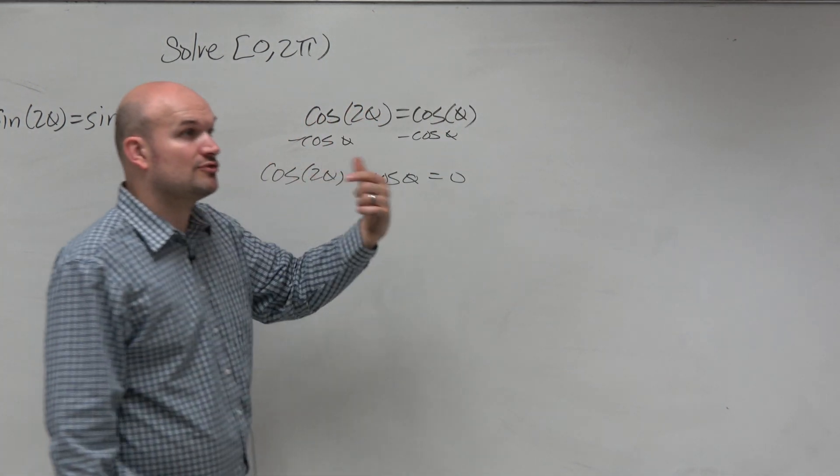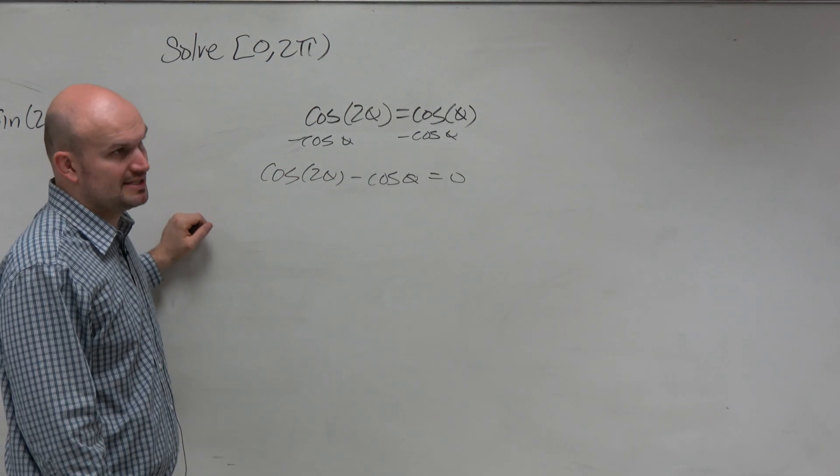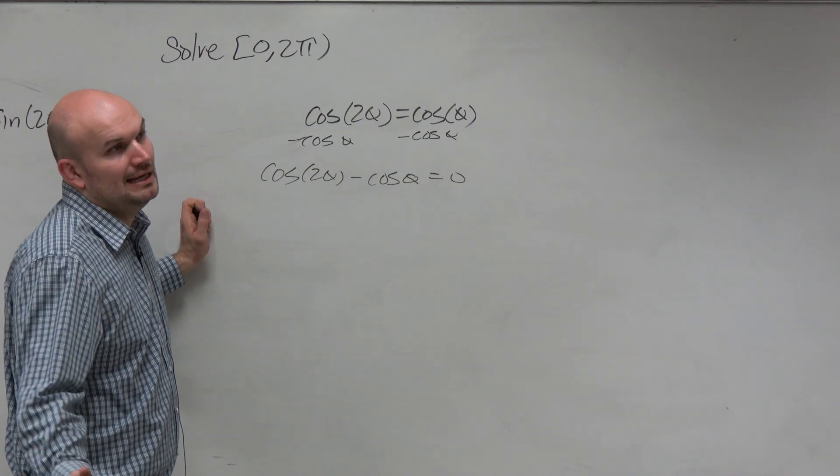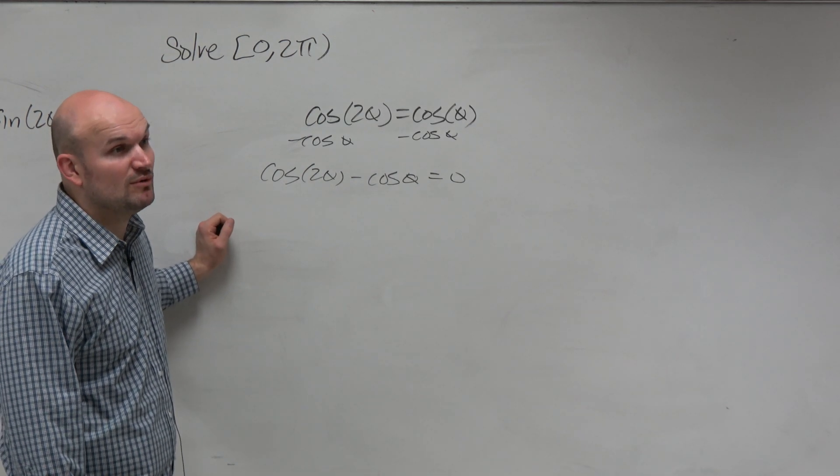So for cosine, there's actually three of them that we have listed. And to determine which one is going to be the right one, it's kind of difficult. You don't really always know which one to use.